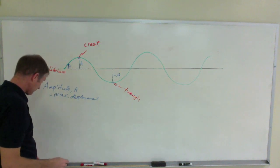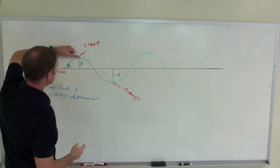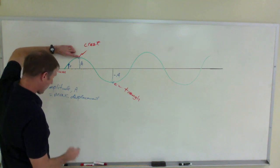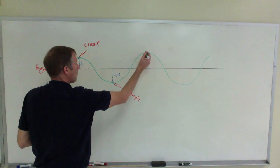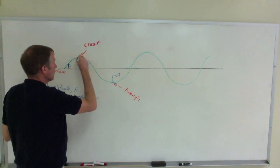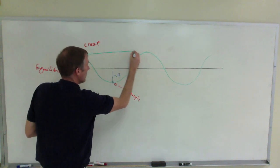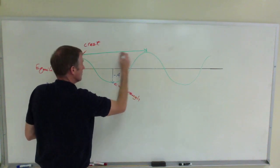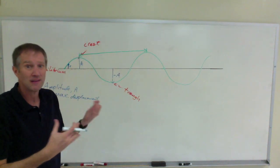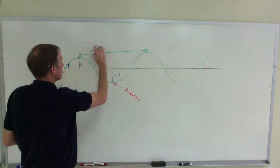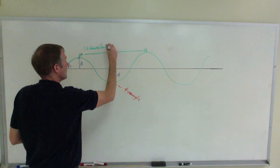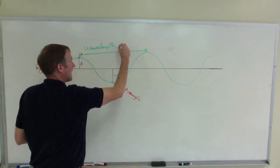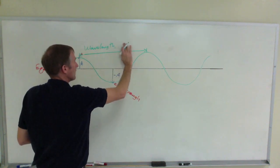So a couple other things. When you measure from one point to a successive identical point on a wave, from one point to a successive identical point, they have to be successive and they have to be identical, then you get what's called the wavelength. Wavelength, wavelength, which uses the Greek letter lambda.